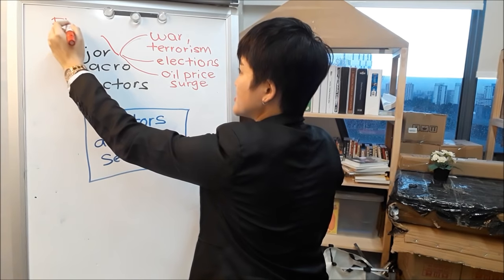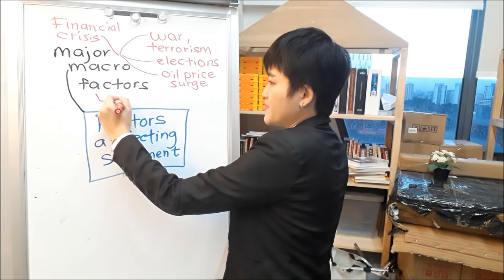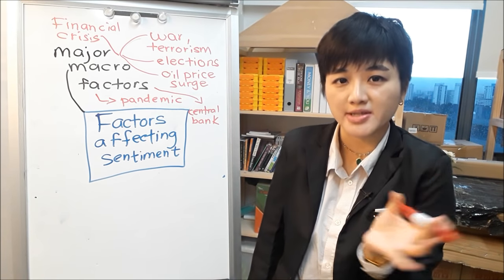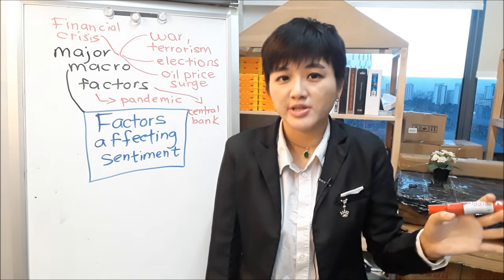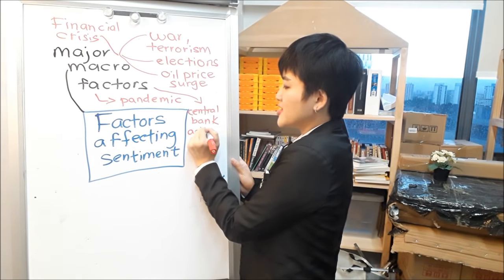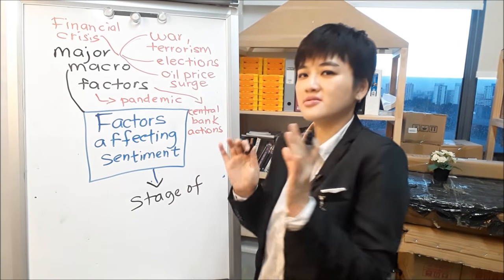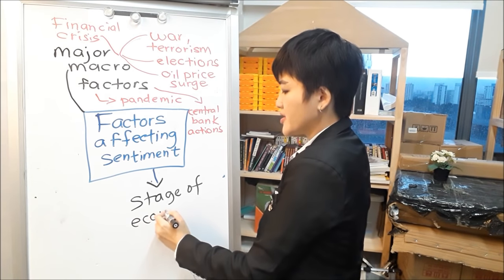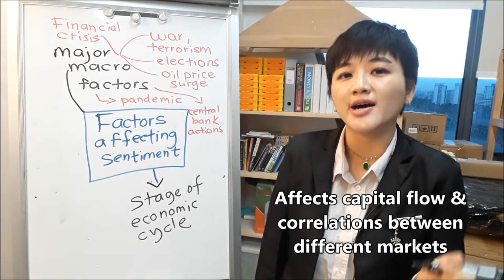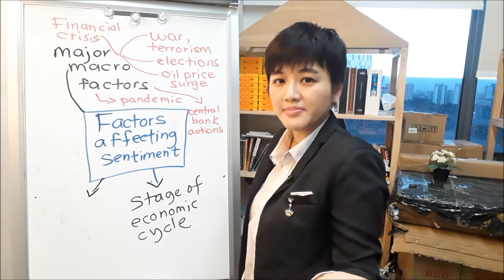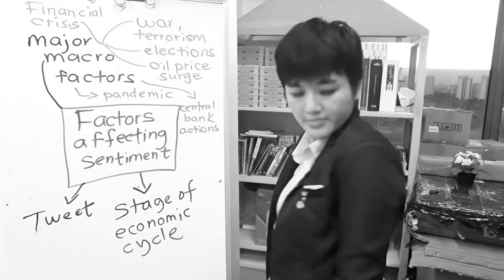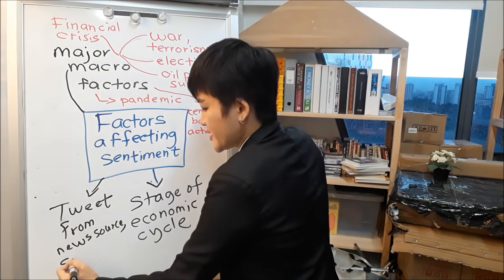Things like financial crises, central bank actions that are unexpected — these change sentiment. A tweet from a major market influencer or a major news source that everybody is talking about can also shift sentiment. The second factor is at which stage of the economic cycle we are in right now. This is going to affect where capital flows to and where capital flows out of.